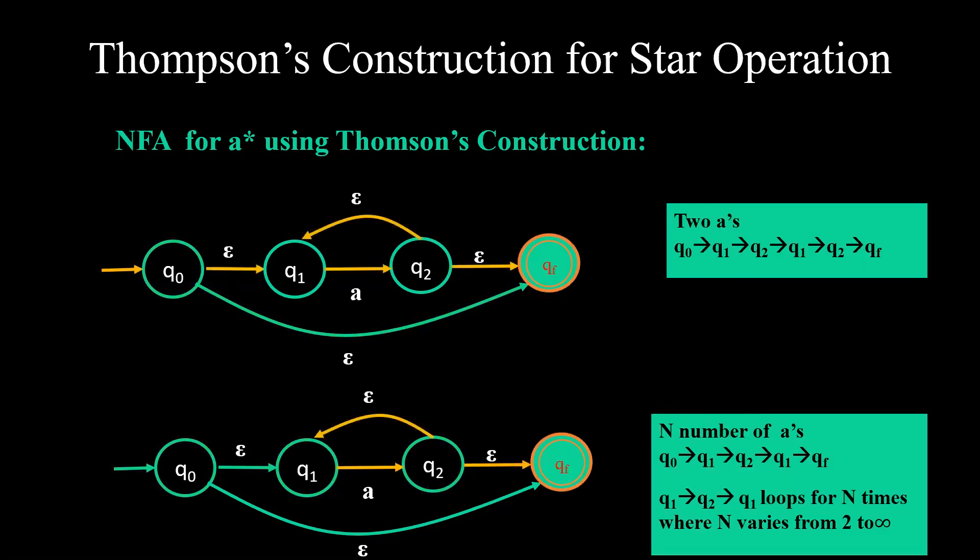Now if I say that I have two a's to be traversed. First I will move from q1 to q2 on a. I'll move back from q2 to q1 on epsilon. I'll consume second a from q1 to q2 and then I'll move out. So I am covering basically 2 a's. If I say n number of a's, what will happen? I will keep on moving in this loop from q1 to q2 back from q2 to q1, and any number of a's which I want I can traverse and ultimately I'll move to the final state.